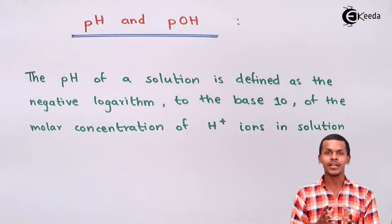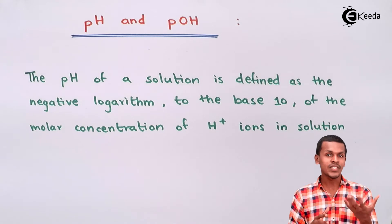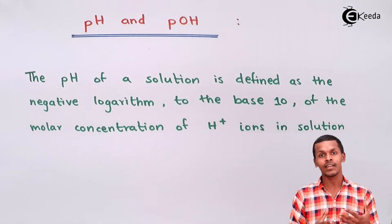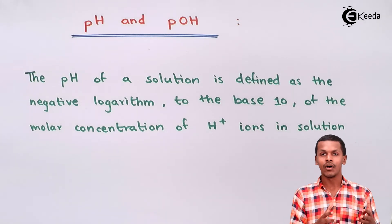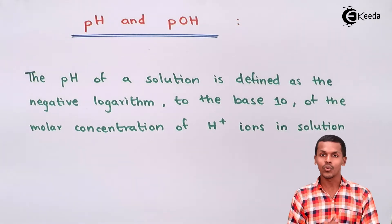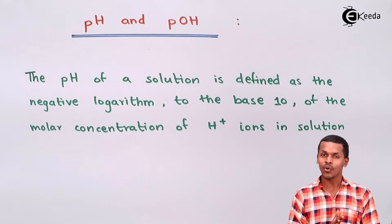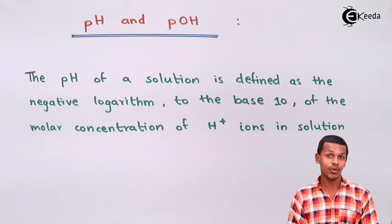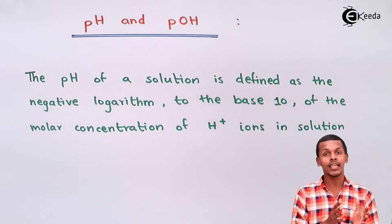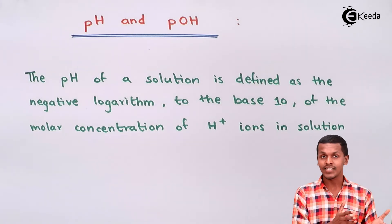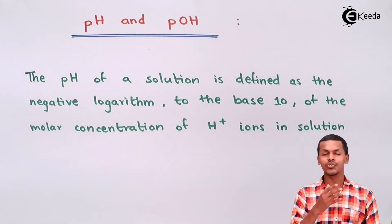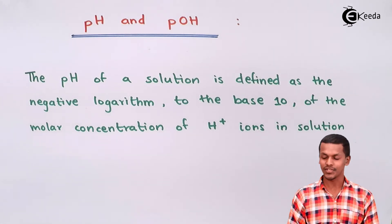This indicates that obviously if the H+ ion concentration goes on increasing, then the acidity of the solution will also go on increasing. That is the reason we are going to talk about pH and pOH. While pH gives detail about the acid, pOH gives detail about a particular base. So let us start with pH.